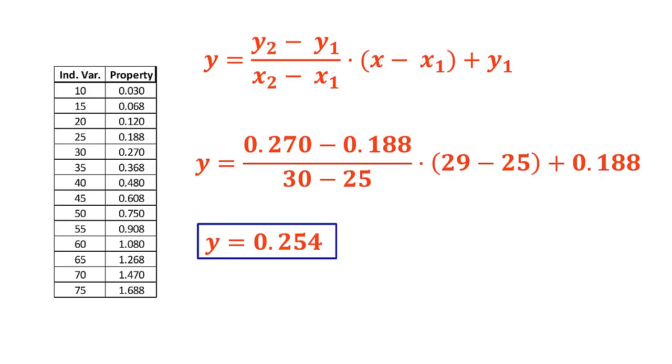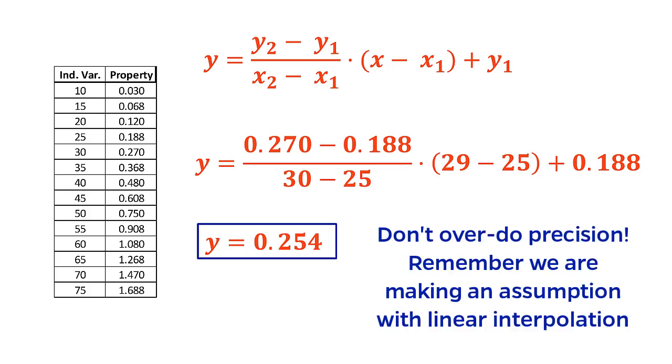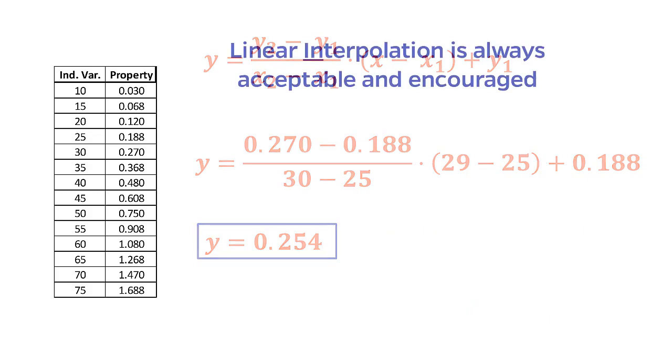Applying this to my example, we can get a much more precise answer for the value of the variable at 29. Be careful about overdoing the precision though. Remember that we are assuming that the data is linear within this interval, which it truly isn't.